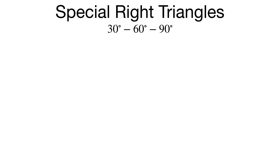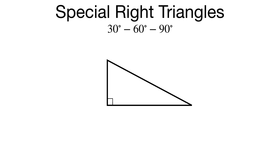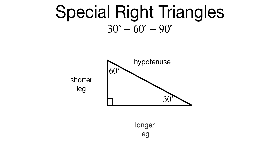Let's start with the right triangle. The two acute angles are going to measure 30 degrees and 60 degrees. Our hypotenuse is going to be opposite that 90-degree angle — that's always true. Our two legs are going to be different lengths: one will be shorter than the other. The shorter leg will be opposite the 30-degree angle, and the longer leg will be opposite the 60-degree angle.